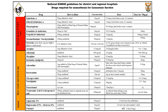A non-depolarizing muscle relaxant is usually not necessary, but if you use one, you must prepare a reversal consisting of glycopyrrolate at 0.4 milligrams and neostigmine at 2.5 milligrams.